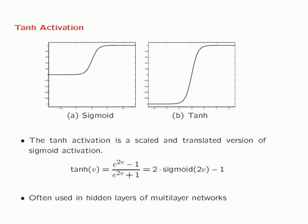In the hyperbolic tangent, values could be either positive or negative, which is often more desirable than the sigmoid when used in hidden layers. Even in cases where the output could be either positive or negative, the tanh function can be used. However, the tanh function is more commonly used in the hidden layers of multilayer networks.